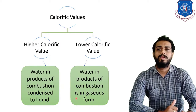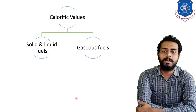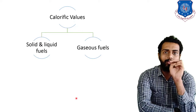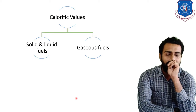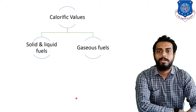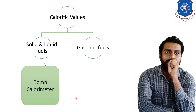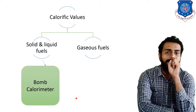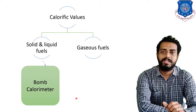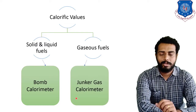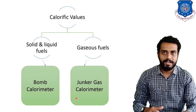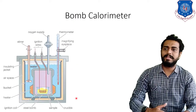Calorific values are measured using two types of instruments depending on fuel type. For solid and liquid fuels you can use a bomb calorimeter, and for gaseous fuels you use a Junker gas calorimeter. Let us understand the bomb calorimeter first.